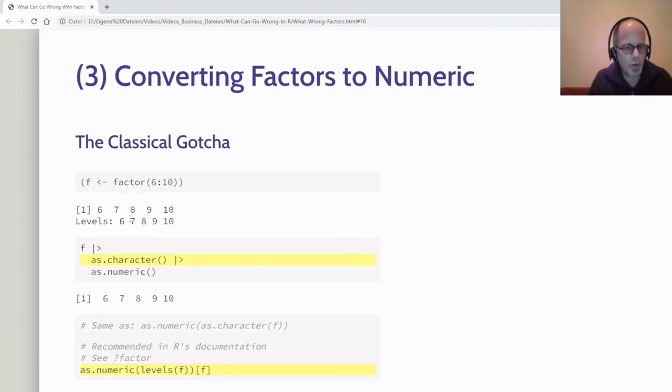Let's see how we can solve these two issues. For the classical gotcha, the solution is very simple. Before converting to numeric, we convert the factor to character. First converting to character, then to numeric, and then with this example, the numbers from 6 to 10, we indeed get a numeric vector back that holds the expected numbers from 6 to 10. Note that here I used base R's pipe operator that was introduced in R version 4.1. If you don't like that—I like it for readability here—you can also use the classical approach you see here in this comment with nested parentheses, as.numeric(as.character(f)), so that works just as well. I just don't find it so reader-friendly because the important takeaway here is that first you have to convert to character. Here we have to read from inside out or from right to left—after it has been converted to character, you have to convert it to numeric.